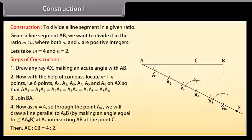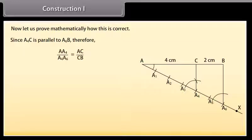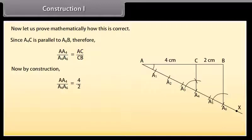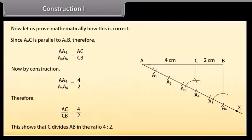Then AC to CB is equal to 4 is to 2. Now let us prove mathematically how this is correct. Since A4C is parallel to A6B, therefore by the basic proportionality theorem, AA4 upon A4A6 equals AC upon CB. By construction, AA4 upon A4A6 equals 4 upon 2. Therefore AC upon CB is equal to 4 upon 2. This shows that C divides AB in the ratio 4 is to 2.